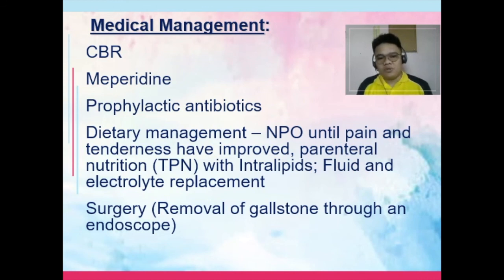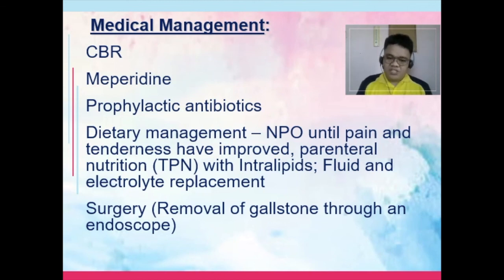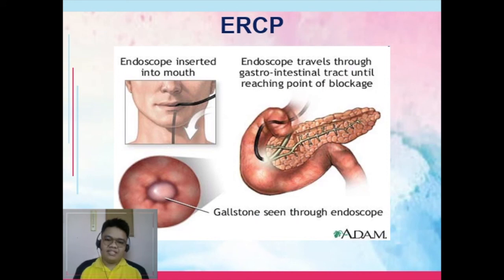Medical management includes complete bed rest, and pain is managed with morphine or meperidine — meperidine being preferred when spasm is involved. Prophylactic antibiotics are given. Dietary management includes NPO until pain and tenderness have improved, and TPN with intralipids since lipase is not functioning properly. Fluid and electrolyte replacement is needed, including calcium gluconate. An NGT is placed for decompression and later for nutrition. A low fat diet is used when oral intake resumes, and alcohol is strictly prohibited. Surgery may be performed if a gallstone is the cause, and ERCP may also be used with the same endoscope preparation.